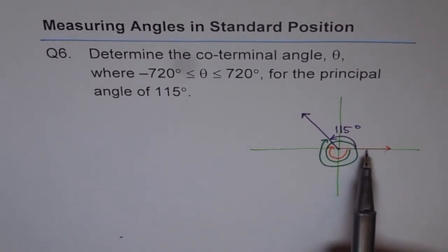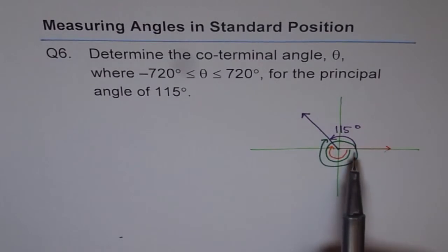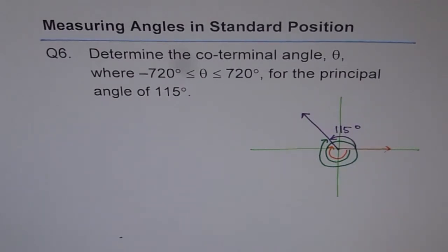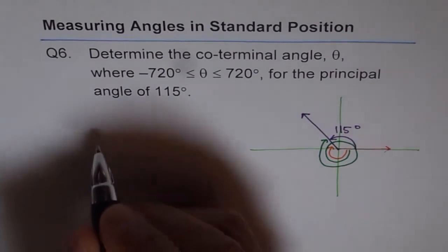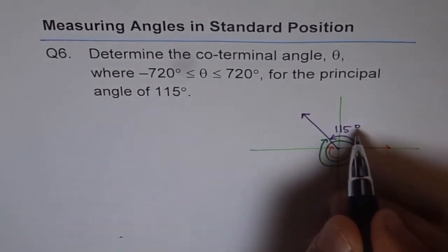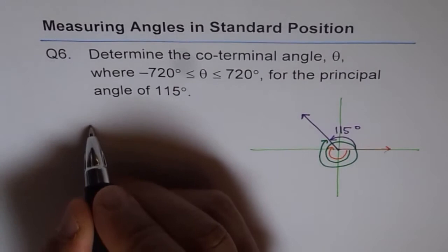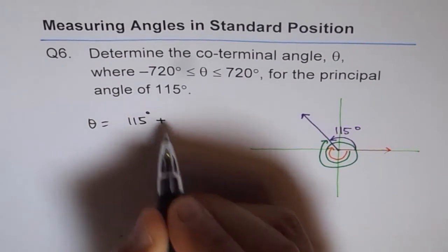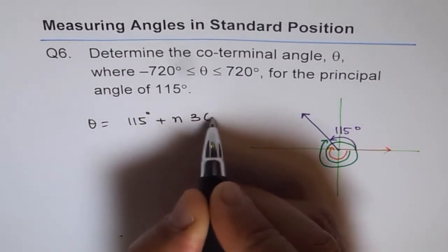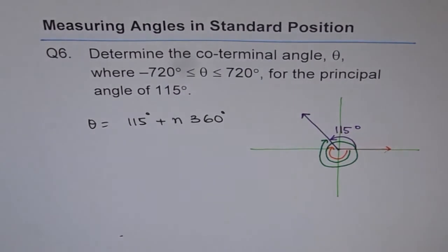Co-terminal means the same initial arm and same terminal arm. If you go counterclockwise it is positive; if you go clockwise it is negative. So the principal angle is 115 degrees for us. The co-terminal angle theta could be 115 degrees plus n times 360 degrees, where n could be plus or minus 1, plus or minus 2, plus or minus 3 — any integer.